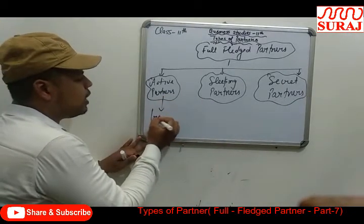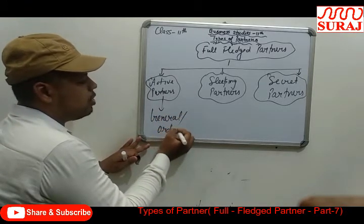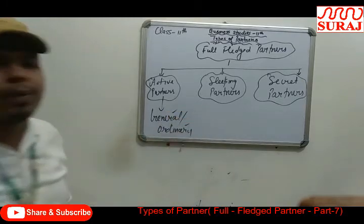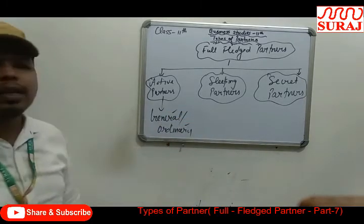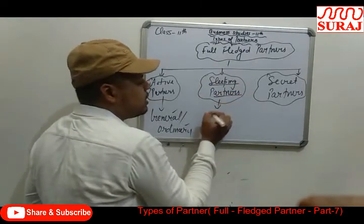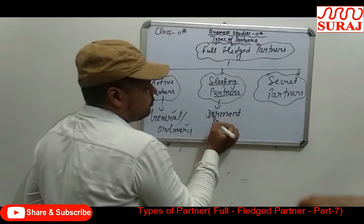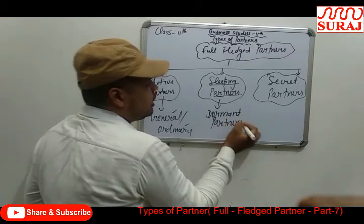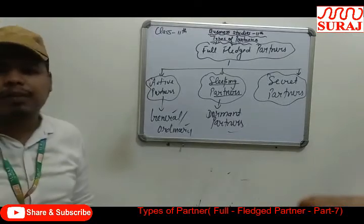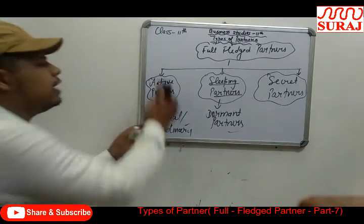The active partner is also known as the general partner and ordinary partner. The sleeping partner is also known as the dormant partner. The secret partner has no other name.